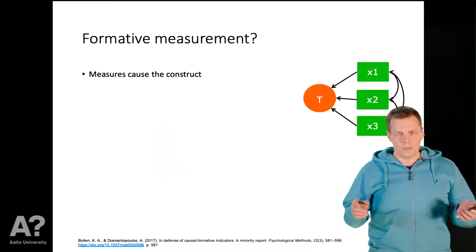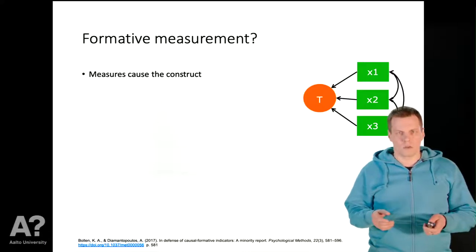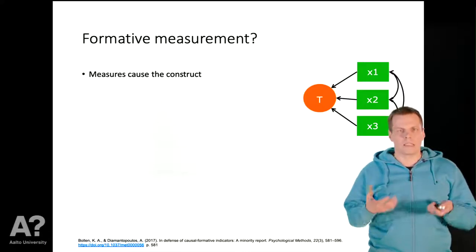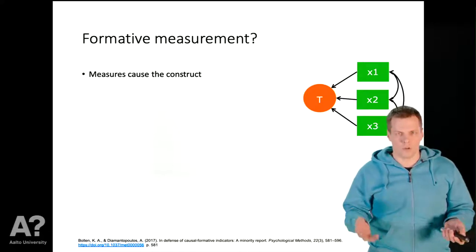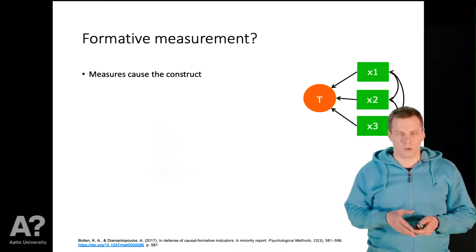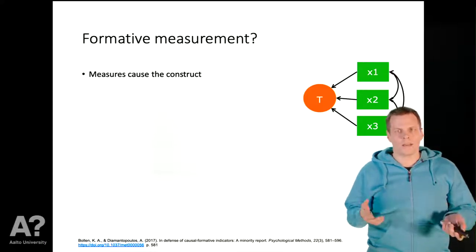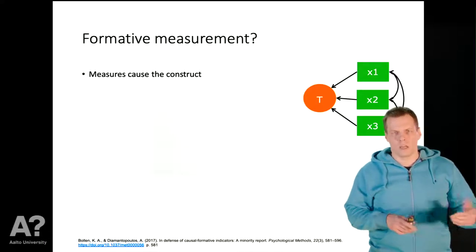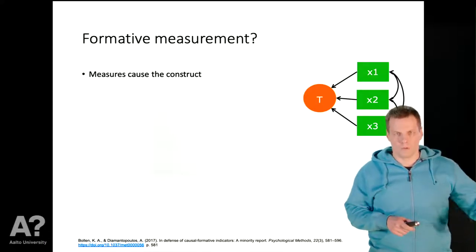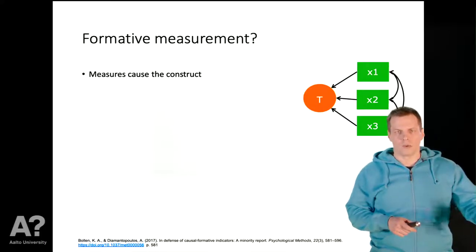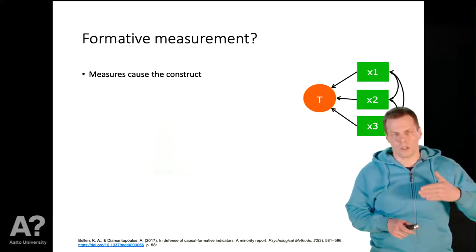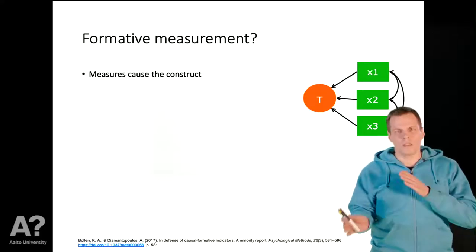In formative measurement, this idea is reversed. The idea is that the measure causes the construct, or a set of measures together cause the concept that we are measuring. What exactly does it mean that a measure causes the construct? It's easy to understand how the innovativeness of a company could cause some people to respond highly on a question about innovation and others to respond lowly. So what does it mean that this is reversed?